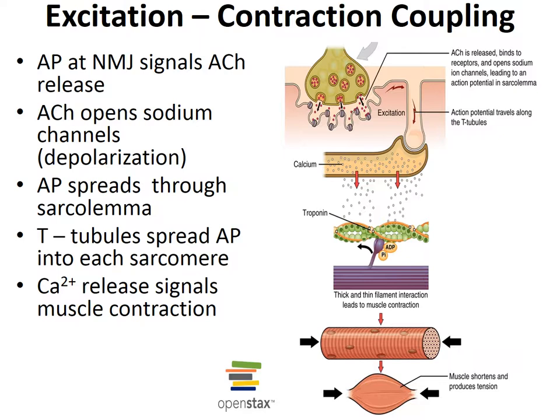The action potential arriving at the neuromuscular junction signals the release of acetylcholine, down to the calcium signals triggering muscle contraction. This is known as excitation-contraction coupling. As the action potential propagates along the sarcolemma, it moves down the T-tubules. Transmission of the action potential past the triads causes the terminal cisternae of the sarcoplasmic reticulum to release calcium into the sarcoplasm, where it becomes available to the myofilaments of the sarcomere. The presence of calcium on the sarcomere causes myosin to bind to actin in a process commonly referred to as the sliding filament mechanism.